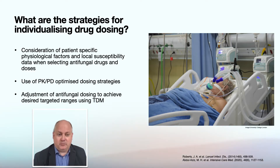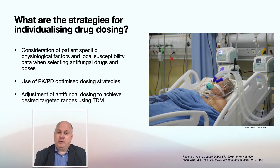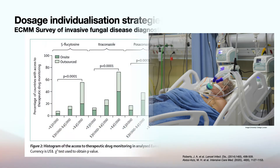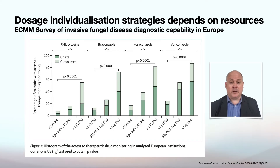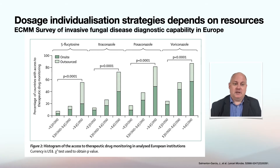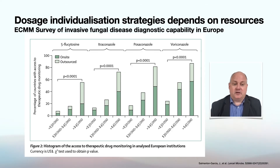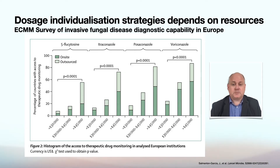If we have therapeutic drug monitoring available, can we adjust dosing to achieve desired target ranges? When putting together this guideline — the One World Health guideline — we recognize that TDM is not necessarily available in all centers. Even in Europe, an ECM survey of invasive fungal disease diagnostic capability clearly illustrated that in many less-resourced centers, therapeutic drug monitoring is simply not available, or it's a send-out test and may not be reported in a timely fashion. We try to take that into account with our recommendations.